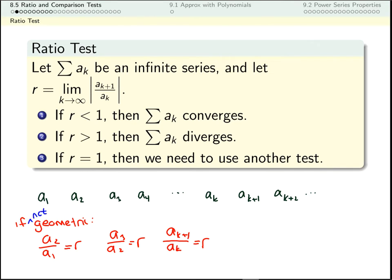Now if we don't have a geometric sequence, these won't all be the same. I might get different ratios at different pairs. So what I do is I take a limit. I take the limit as k goes to infinity of these ratios.